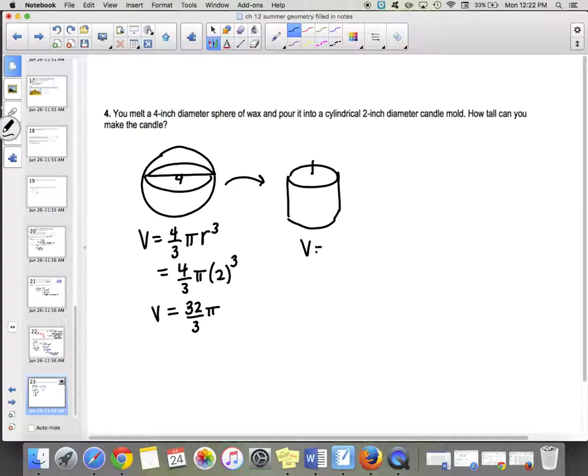This cylinder has volume πr²h, area of the base times height. The area of the base is πr². We want that to equal 32/3 π. Our radius is, well, we want it to be 2-inch diameter. If we have 2 inches in diameter, we have 1 for our radius.